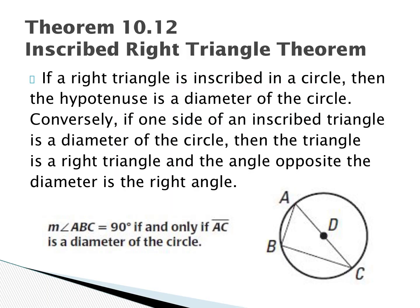This is the Inscribed Right Triangle Theorem: if a right triangle is inscribed in a circle, then the hypotenuse is the diameter of the circle. Conversely, if one side of an inscribed triangle is the diameter, then the triangle is a right triangle and the angle opposite the diameter is the right angle. In this figure, if angle ABC is 90°, then AC must be a diameter — and if AC is a diameter, angle ABC must be a right angle.